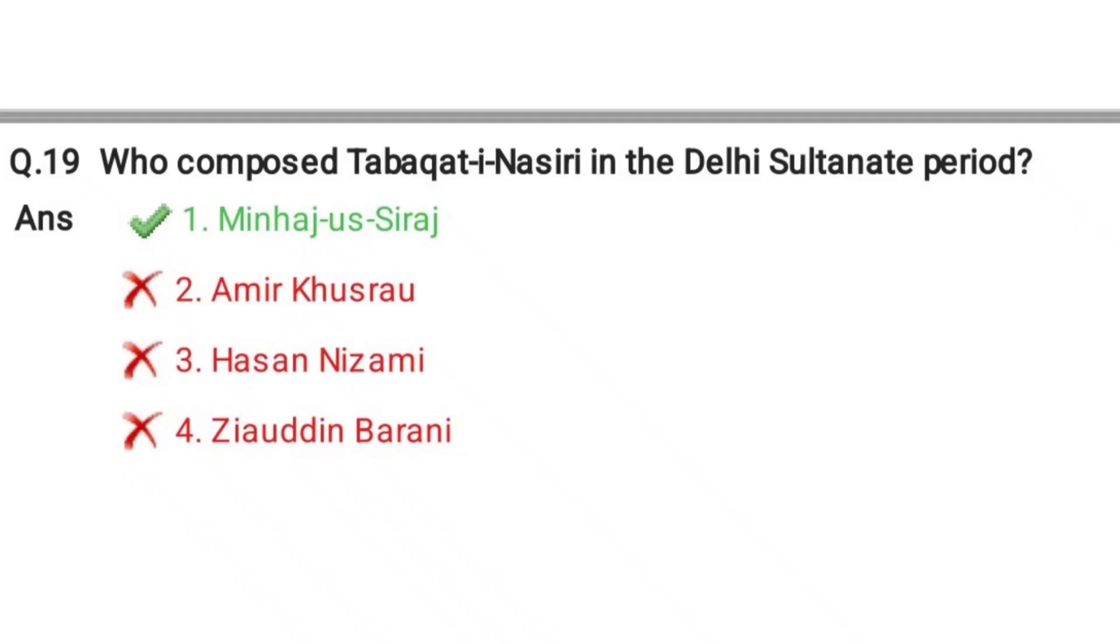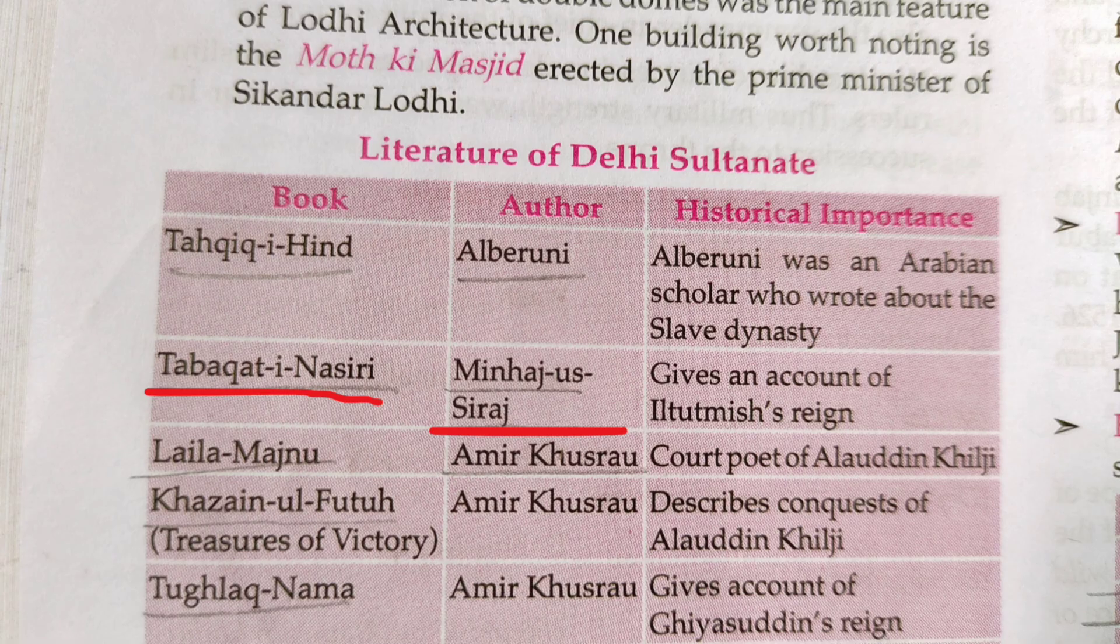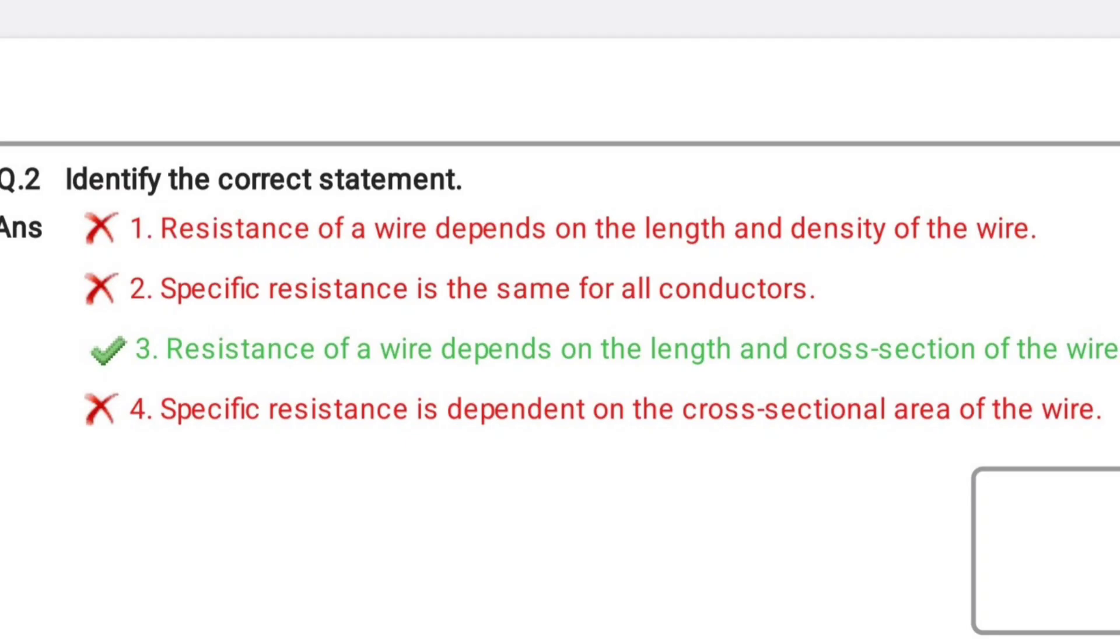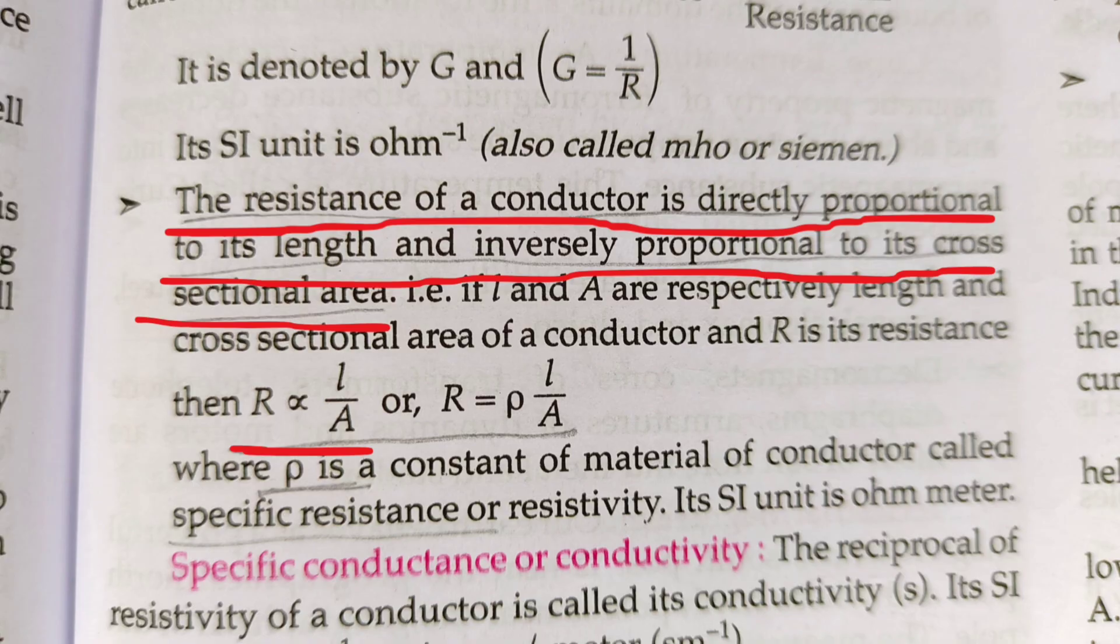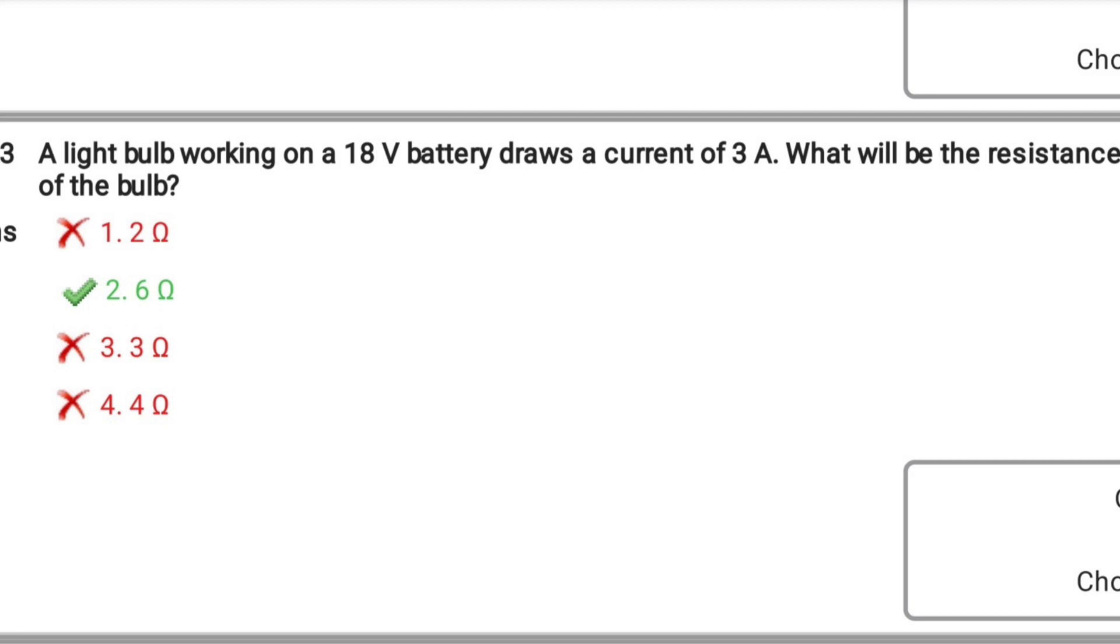Next question, Tabaqat-i-Nasiri? Again direct question. You can see here Siraj. Resistance. It's a direct question. Resistance of a conductor is directly proportional to its length and inversely proportional to cross-sectional area.